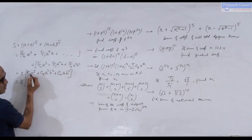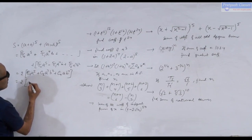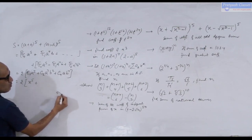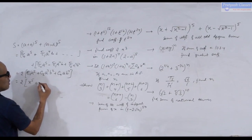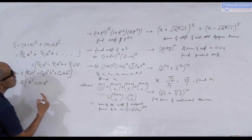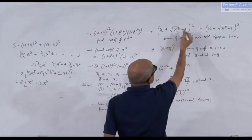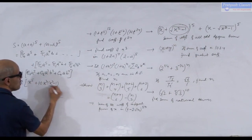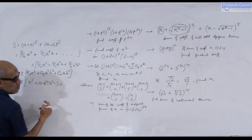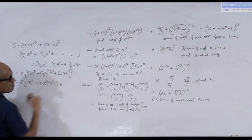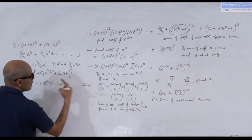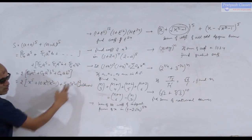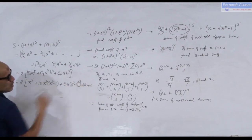So S = 2 × [5C0·x⁵ + 5C2·x³·(x³-1) + 5C4·x·(x³-1)²]. Here 5C0 = 1, 5C2 = 10, and 5C4 = 5C1 = 5. Since b = √(x³-1), b² = x³-1 (the square removes the square root).